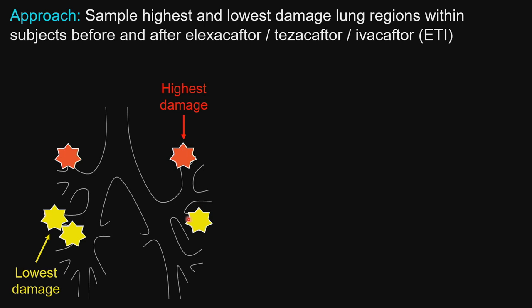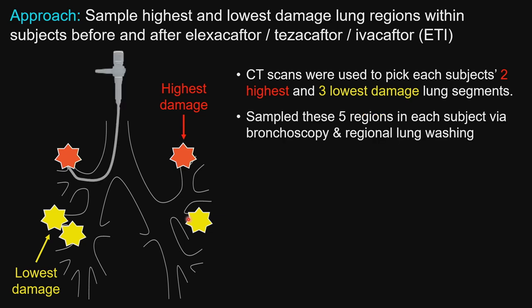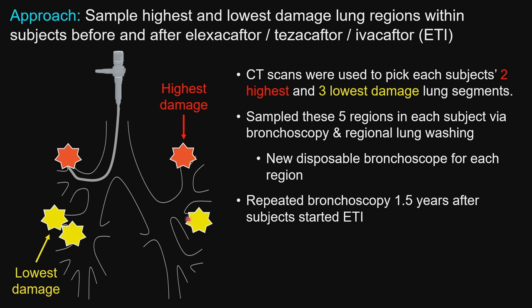Lung damage in non-CF bronchiectasis leads to infection, and removing those damaged regions can cure infection — establishing a link between damage and infection irrespective of CFTR status. To test our hypothesis, we conducted a bronchoscopy study sampling the highest and lowest damaged lung regions within subjects before and after starting ETI. We used CT scans to identify the two highest and three lowest damage regions in each subject, then sampled these five regions using bronchoscopy and regional lung washing.